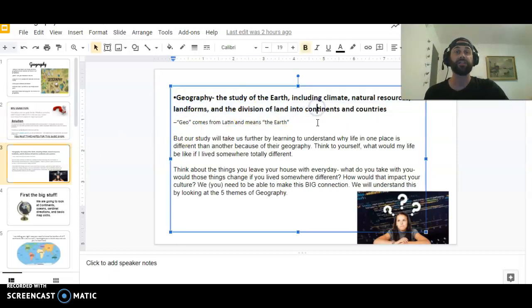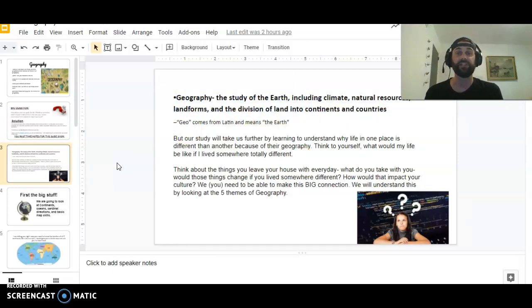Alright, so geography. The first thing we need to do is describe it, give it a definition. It's the study of earth including climate, natural resources, landforms, and the division of land into continents and countries. That's kind of a surface explanation and I want you to read this on your own, but we're gonna go through and take it that next step. How does geography affect culture? How would geography affect civilization? That's where we're going with this.